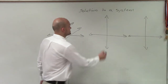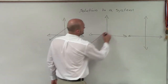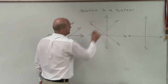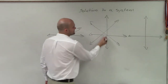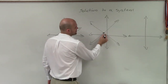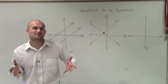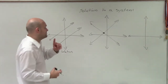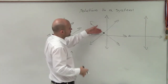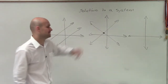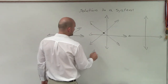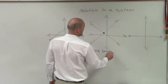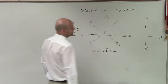Another possibility is we could have intersecting lines. At intersecting lines, the solution is right where those two lines intersect. They only intersect at one point, so your solution is only going to be the coordinate (x, y) where they intersect. There is exactly one solution.